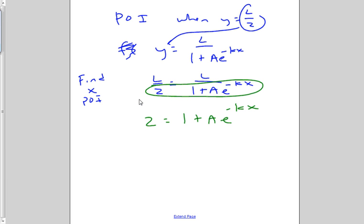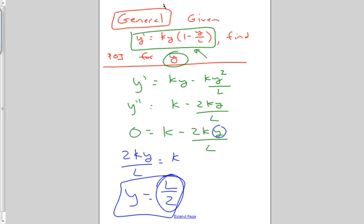We are looking at the point of inflection of the general form of a logistic model. And going back a page, we started with this general equation and found the second derivative. We set it equal to zero. We found out that it's going to equal zero when y is half of L.